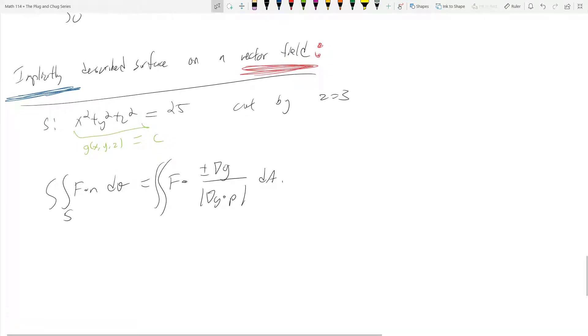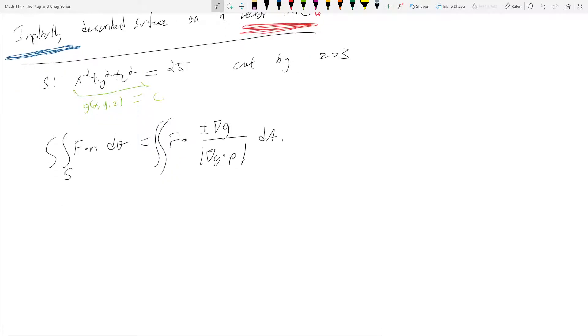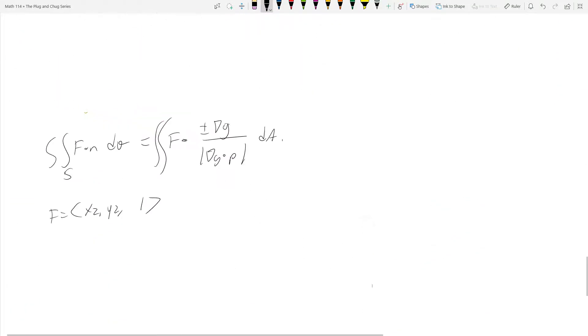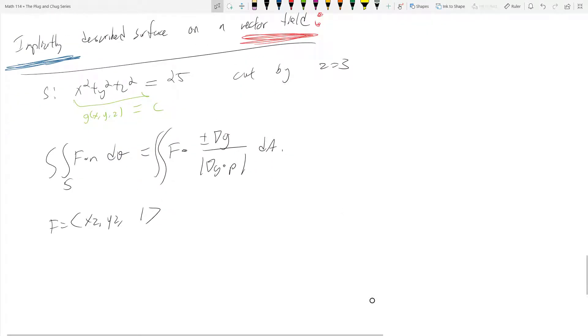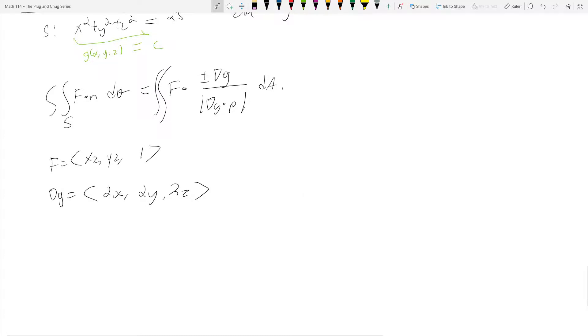All right, enough blabbing. Let's jump into the problem now. So I got my surface, it's cut by z equals 3. And so what is F? Remember, F was xz, yz, comma 1. And if you scroll up in these notes, I'll just scroll up for you guys. So F is that guy. All right, that's fine. What is gradient of g? So g is x squared plus y squared plus z squared. And so then that means it is going to be 2x, 2y, 2z.